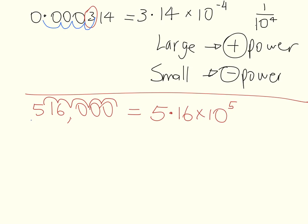Again you'll notice, first digit, then my decimal point, then the other digits that are left, times 10 to the power of whatever number of decimal places I've had to move to go from where it started to where it ends up. Let's go one more.